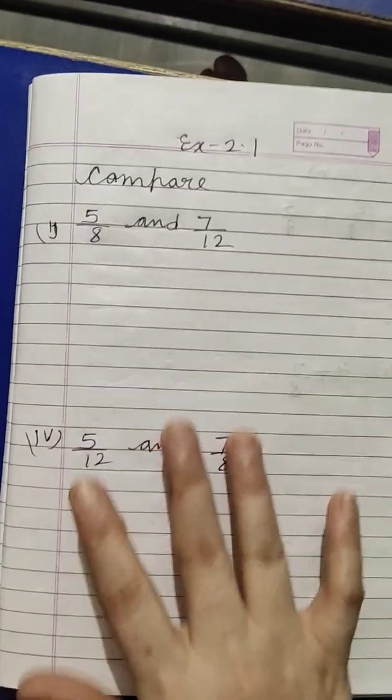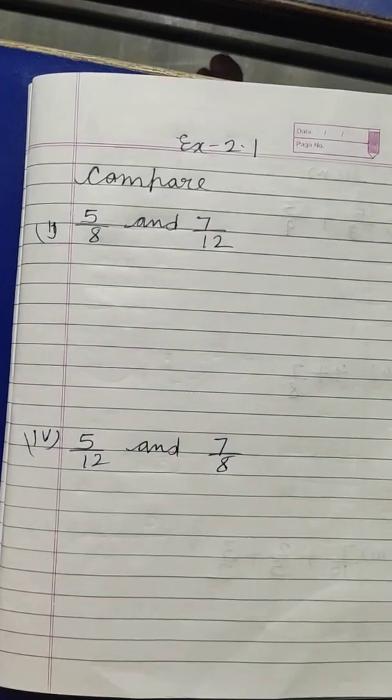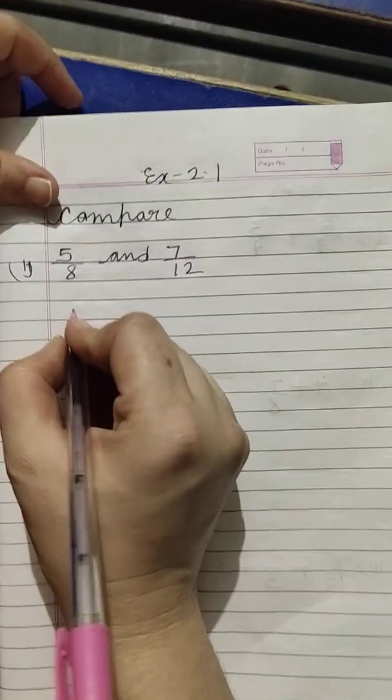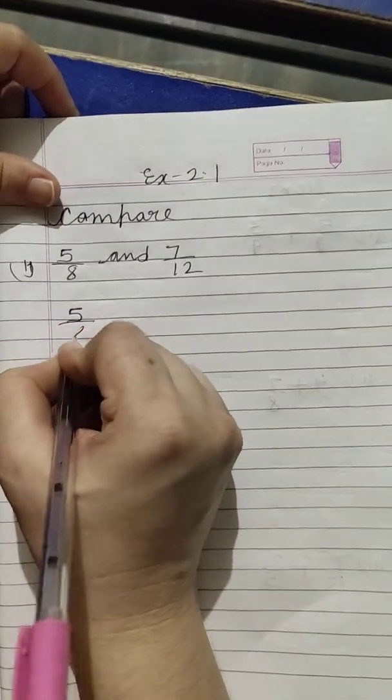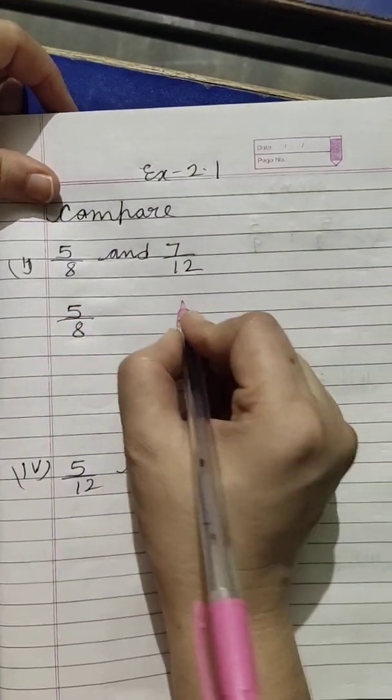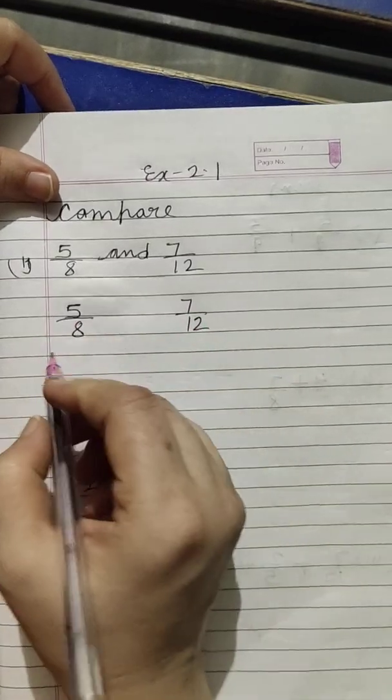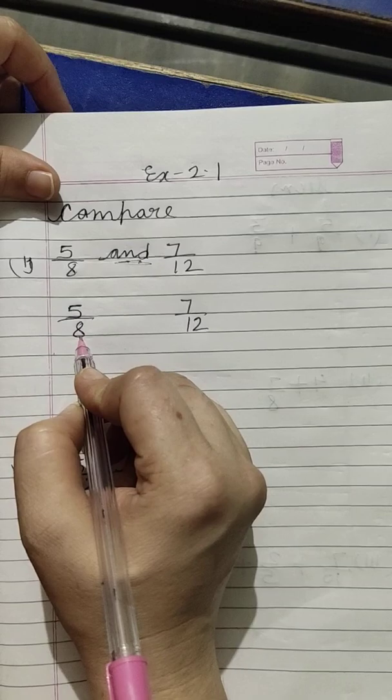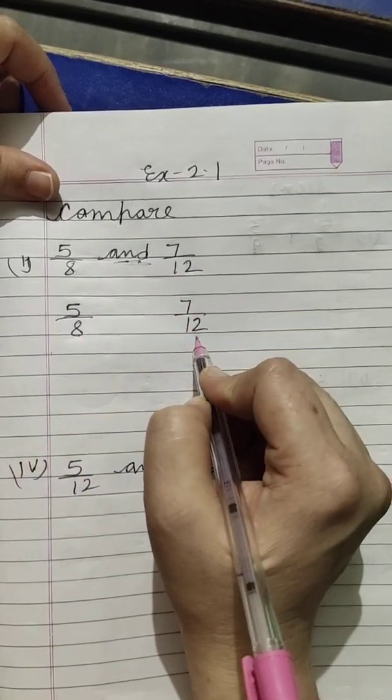Look at these questions. First and fourth I will do, the rest you'll do. So understand carefully. 5 upon 8 or 7 upon 12 as it is. Take the end and take the end. 5 upon 8 as it is, 7 upon 12 as it is.